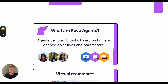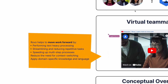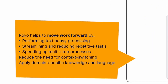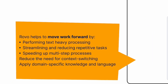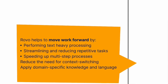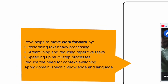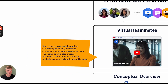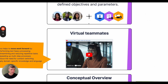So what are Rovo agents? You can think of them as customizations of Rovo's AI capabilities that are designed to perform specific kinds of tasks. The goal is to help users move work forward by utilizing Rovo's natural language capabilities. Rovo agents are useful for many kinds of text-heavy processing where there is some kind of pattern to the work that needs to be performed. But perhaps the best way to think of Rovo agents is as virtual teammates.